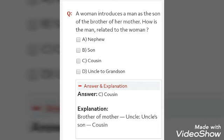A woman introduces a man as the son of the brother of her mother. How is the man related to the woman? Now, here you have to find out the relationship. So first you have to understand the question. From the question itself, we will get the answer. These types of questions are a little bit tricky. The options are nephew, son, cousin, uncle to grandson.